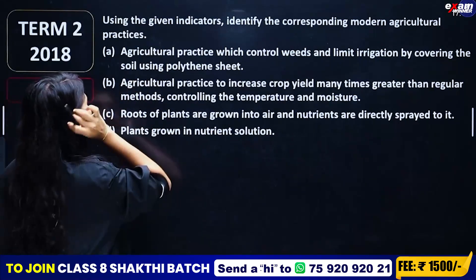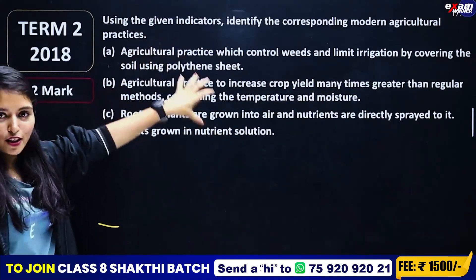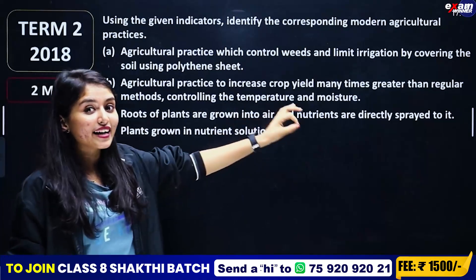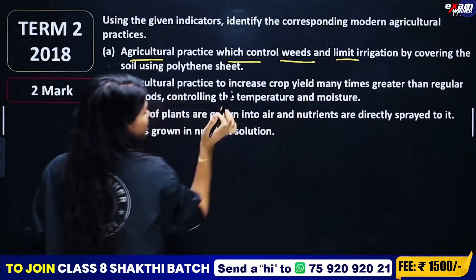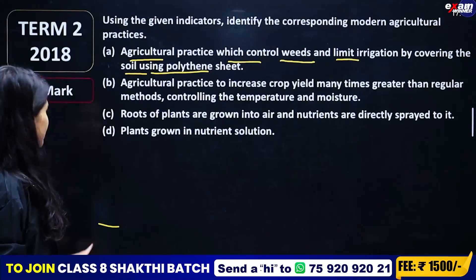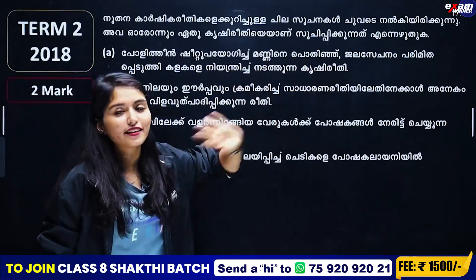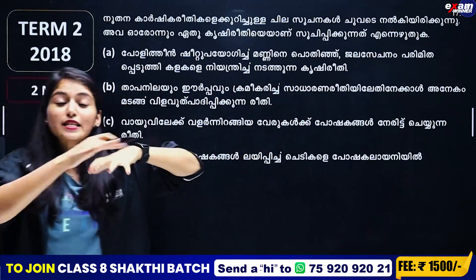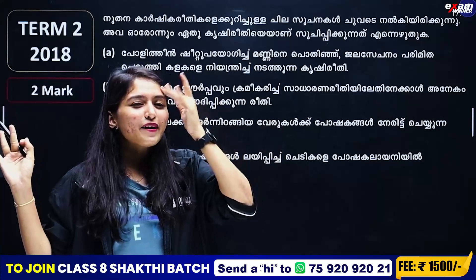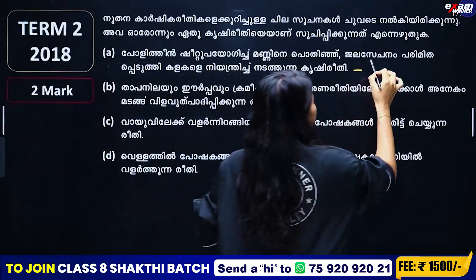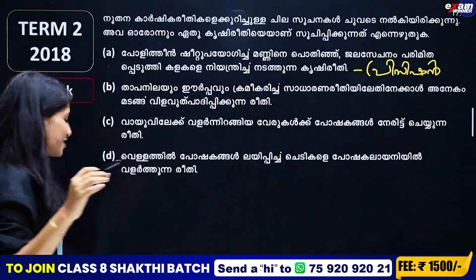First question: using the given indicators, identify the corresponding modern agricultural practices. You should have asked what modern agricultural practices are. Agricultural practices which control weeds and limit irrigation by covering the soil using a polythene sheet — what is the name? I am pointing to the soil using a polythene sheet for plants. We are using precision farming — that's what we learn from it.